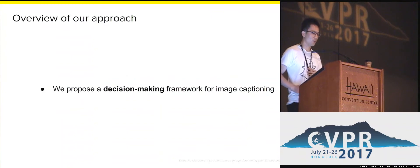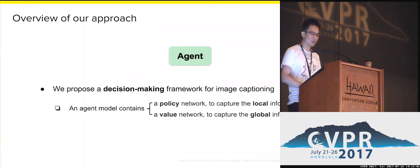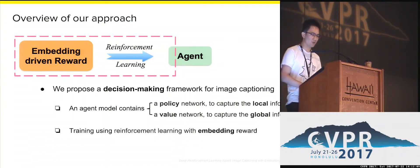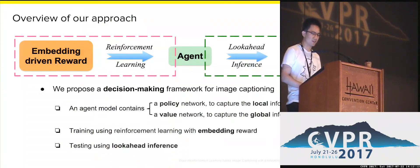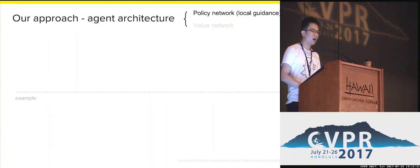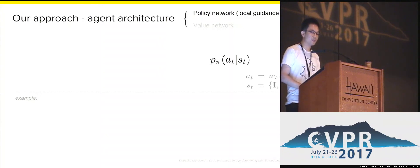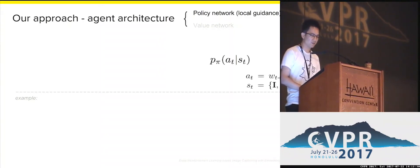Now let me give an overview of our approach. Our target is to better capture global information and be less likely to accumulate errors during inference. We designed our agent, which contains a policy network to capture local information and a value network to capture global information. We also proposed an embedding-driven reinforcement learning method for training and a look-ahead inference for testing. Our policy network serves as a local guidance, providing the confidence of generating the next word according to the current state.